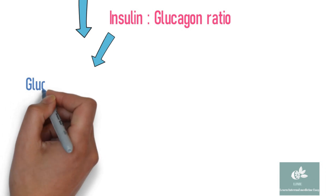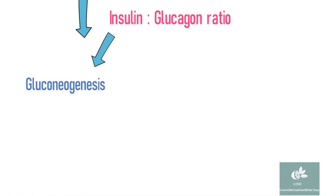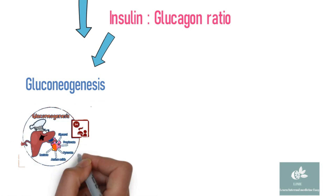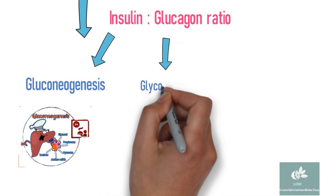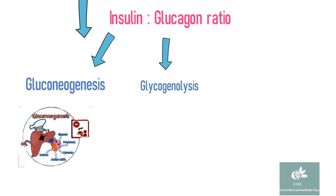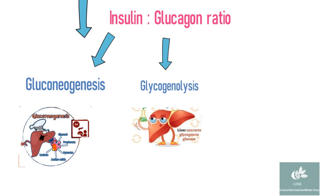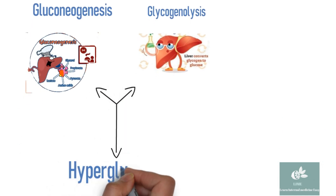This increased glucose synthesis is due to glucagon excess, which decreases the activity of pyruvate kinase, whereas insulin deficiency increases the activity of phosphoenolpyruvate kinase. This change shifts the handling of pyruvate toward gluconeogenesis. The increased hepatic gluconeogenesis and glycogenolysis results in hyperglycemia.